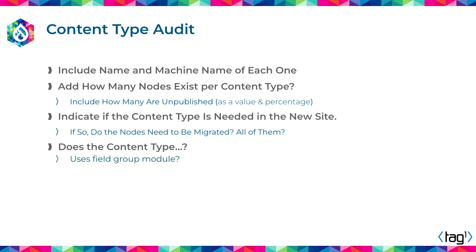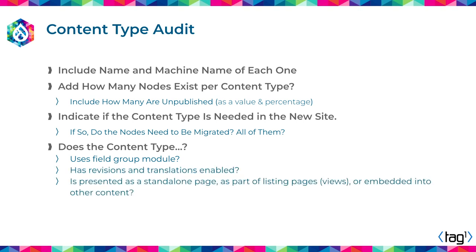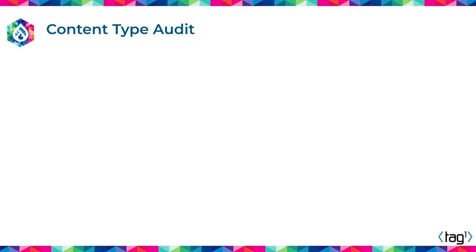For every content type: does it use the organic groups module? Does it have revisions and translations enabled? Is it presented as a standalone page, a listing within a view, or embedded into another content type? In Drupal 7, it was very common to use nodes for many things. In Drupal 8 and beyond, with the evolution of entities, a lot of those things don't have to be nodes anymore. In one of the courses I teach, we explain how to go from nodes to users, from nodes to paragraphs, from files to media entities. Think about what the proper entity type will be when you move.